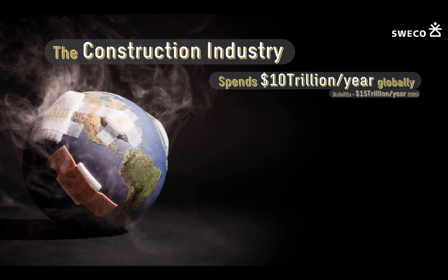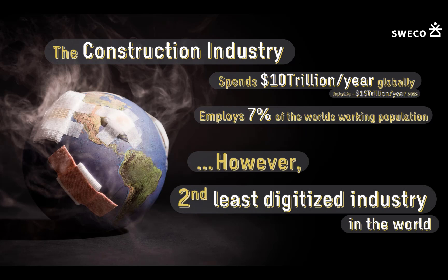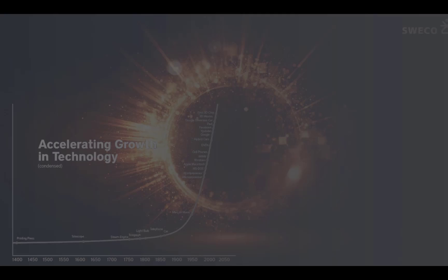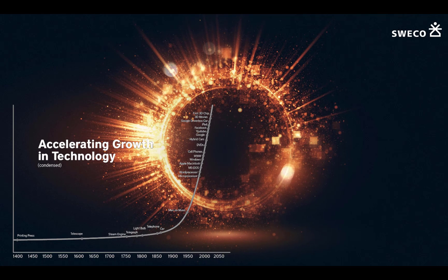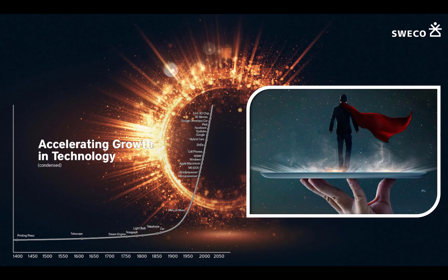The construction industry is a huge industry. It spends about 10 trillion dollars annually and employs about 7% of the world's working population. However, it's also the second least digitized industry in the world, where about 25 to 40% of the world's carbon emissions are spent. But we are also living in a digital age, in an age where technology is growing exponentially. So can we somehow use that as a superpower to help us tackle some of these problems?